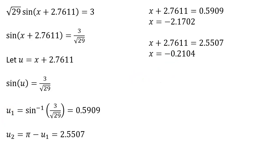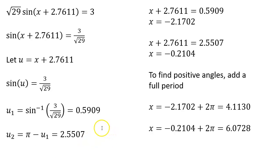And now we have two solutions, but they're negative solutions, and the problem was asking us for the first two positive solutions. And so to find the positive solutions, we can just find coterminal solutions. In other words, we can add a full period.